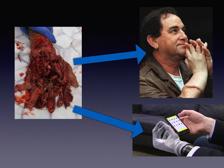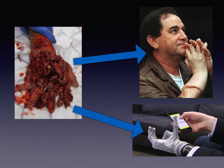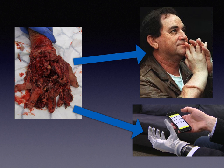If one has a mangling hand injury, what's the optimum reconstruction — a hand transplantation or a modern prosthetic?